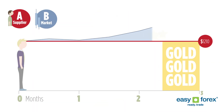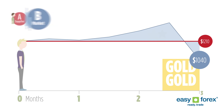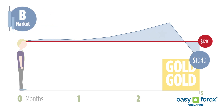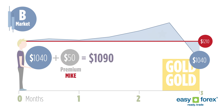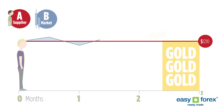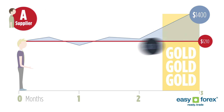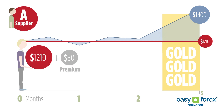If the market price is lower than what they had agreed, then John can cancel his contract with Mike and buy from the market, so Mike only receives his premium. If the market price is higher than what they agreed, John will buy from his supplier, Mike, at the pre-agreed price, which is lower than the current market price.